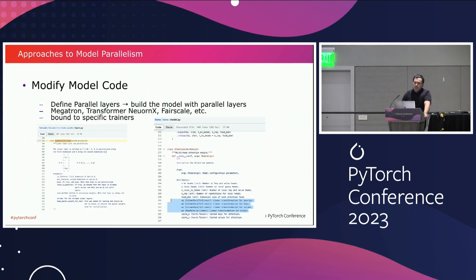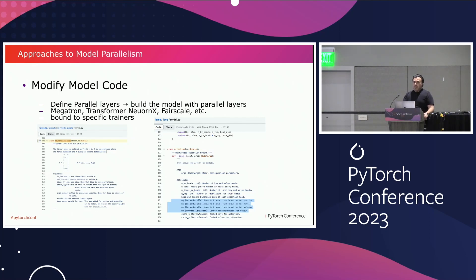Here's an example of modifying your model code — a LLAMA2 model built on top of Ferriscale. On the left-hand side, we are defining those parallel layers, and in the attention layer you can see we are building the model on top of those parallel layers. As I mentioned, this is Ferriscale, but Megatron, Transformer Nix, and others are all the same in nature.